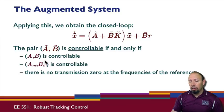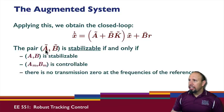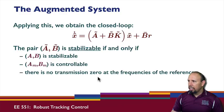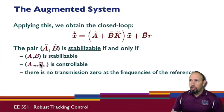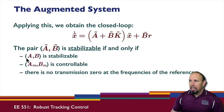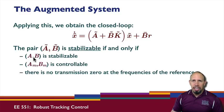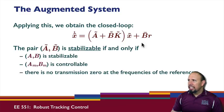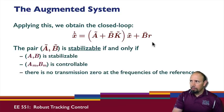If A, B is not controllable, we have a stabilizability result: the pair A tilde, B tilde is stabilizable if and only if A, B is stabilizable, AM, BM is controllable, and there is no transmission zero issue. Since AM, BM controllability is guaranteed by our choice, the bottom line is that A tilde, B tilde are stabilizable if and only if the original system was stabilizable. We only need stabilizability to get a stable controller.